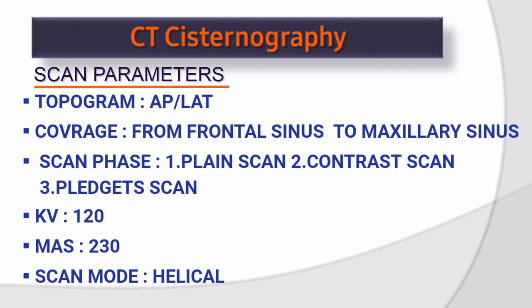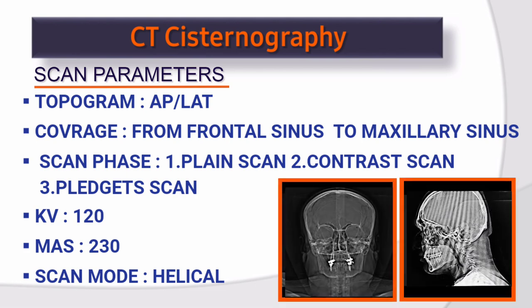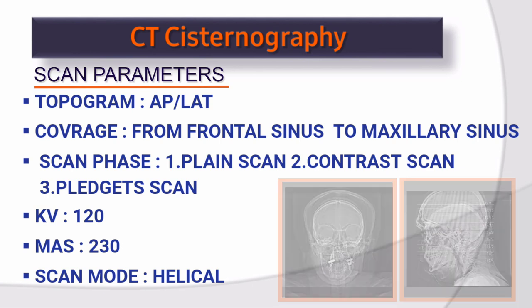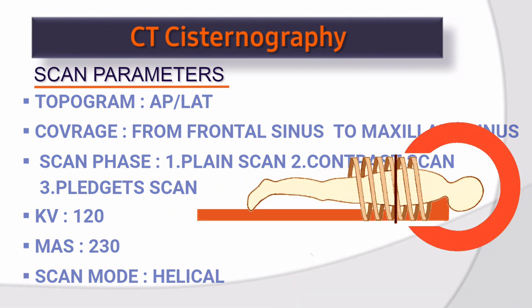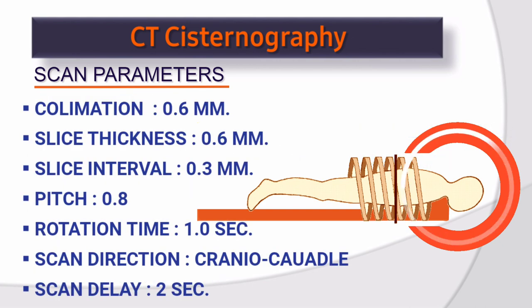Scan parameters. Topogram: AP and lateral. Coverage: from frontal sinus to maxillary sinus. Scan phases: plain scan, contrast scan, pledget scan. kV: 120. mAs: 230. Scan mode: helical. Collimation: 0.6 mm. Slice thickness: 0.6 mm. Slice interval: 0.3 mm. Pitch: 0.8. Rotation time: 1.0 second. Scan direction: craniocaudal. Scan delay: 2 seconds.